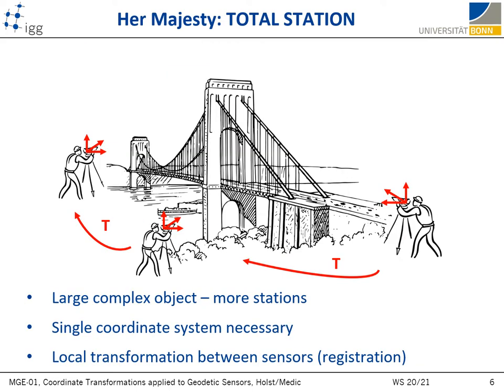However, most often we need to measure large and complex objects, and to do so we need to set up the instrument on multiple positions to capture all necessary details. In order to analyze the object's geometry after measurements, the 3D coordinates of all measured points need to be in a single unique coordinate system. Therefore, we need coordinate transformations between these local sensor coordinate systems defined at each station — in other words, we need the registration process.